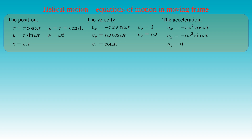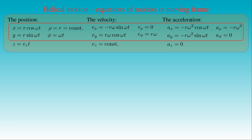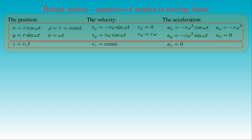The acceleration components in Cartesian are: x equals minus R omega squared cosine of omega t, y equals minus R omega squared sine of omega t, and z vanishes. In cylindrical coordinates, the radial component is minus R omega squared, and both the azimuthal and axial components vanish. These equations demonstrate that uniform helical motion is the composition of uniform linear motion and uniform circular motion. The first two component equations in both coordinate systems are the equations of motion for uniform circular motion, while the axial components give the equations of motion for uniform linear motion.